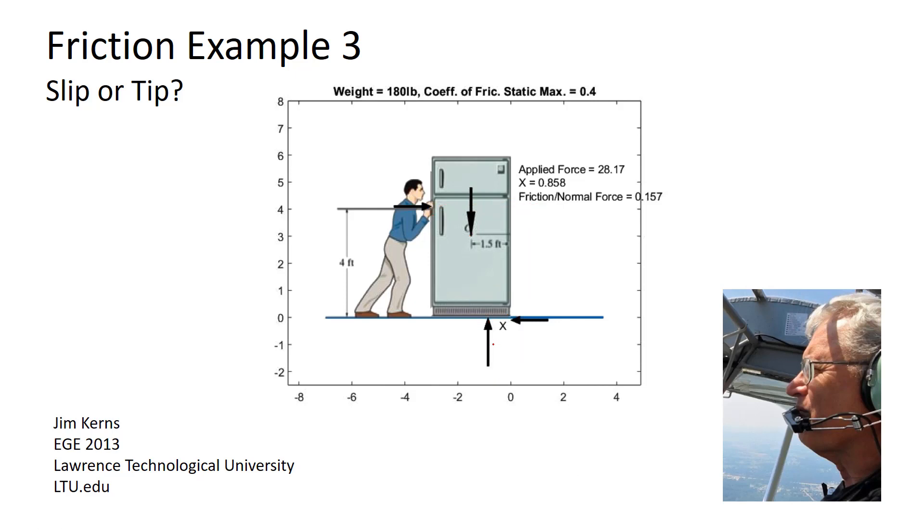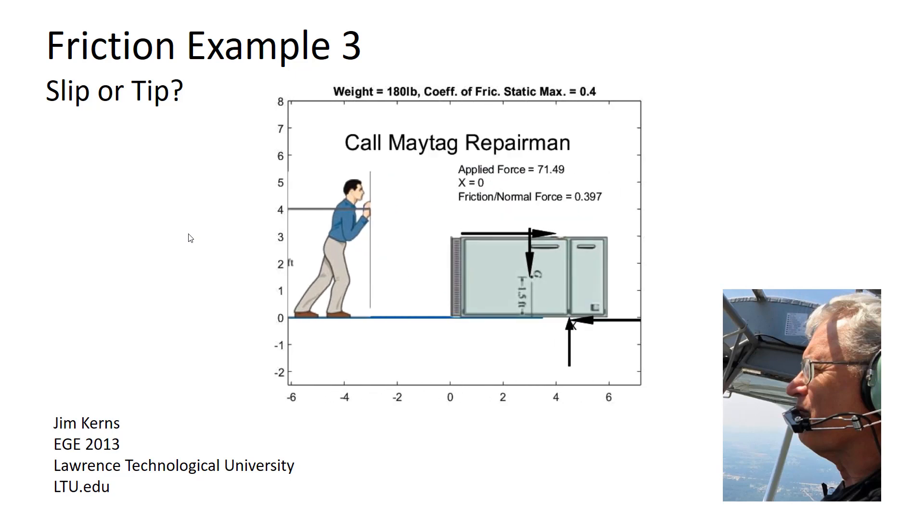So let's continue on the video and see what happens as this effective position of the normal force gets to the edge. So we're pushing harder and harder, we're getting close to the edge, and at some point we get right there, and boom. If we keep pushing, over she goes.